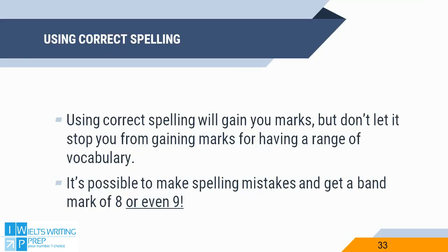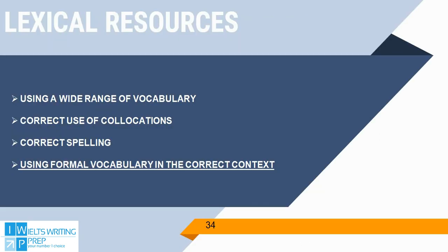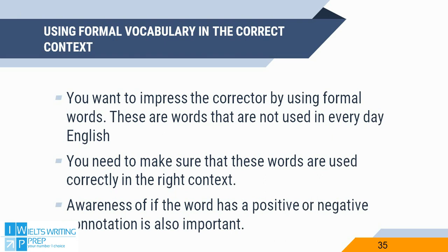We also need correct spelling. Correct spelling will gain you marks, but we don't want to go too extreme — you can make a few spelling mistakes and still get a band 8 or even a band 9. We want to use formal vocabulary in the correct context, which will impress the corrector. We need to make sure we know if a word has a positive or negative connotation, so that we're not using it in the wrong place.